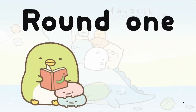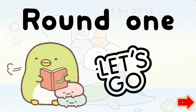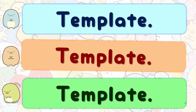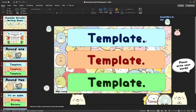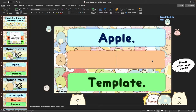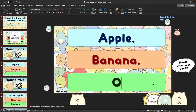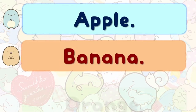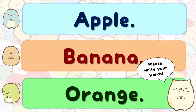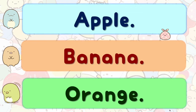Click on the red arrow again for round one, then click once more to reach the template slide. This is a template — you can write in a word or make a full sentence. To keep it simple, let's use fruit words: apple, banana, and orange. You can open the template and write in a word or a full sentence. If you're writing a longer sentence, change the font size to fit it.